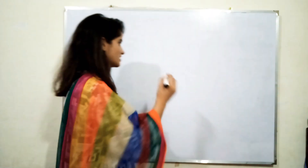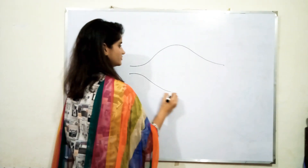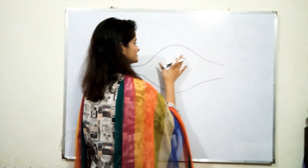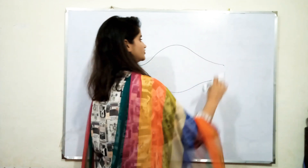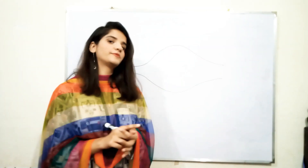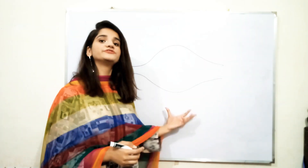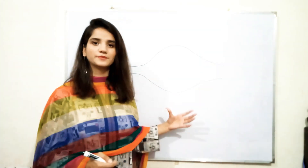We know that there are some sensory receptors that are present in our muscles. For example, this is the muscle — it is the belly of the muscle and these are the tendons of the muscles. Different types of receptors are present at different places and locations in a muscle.